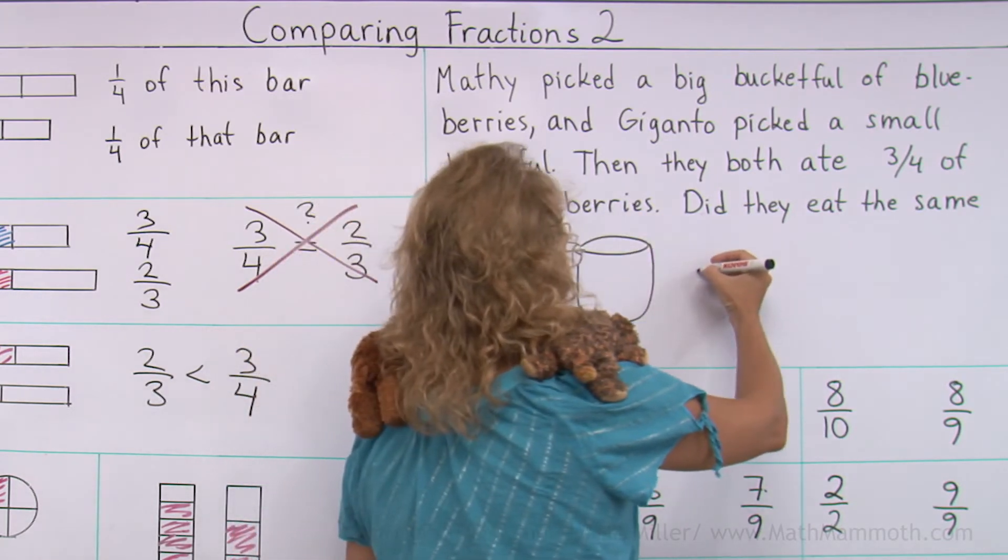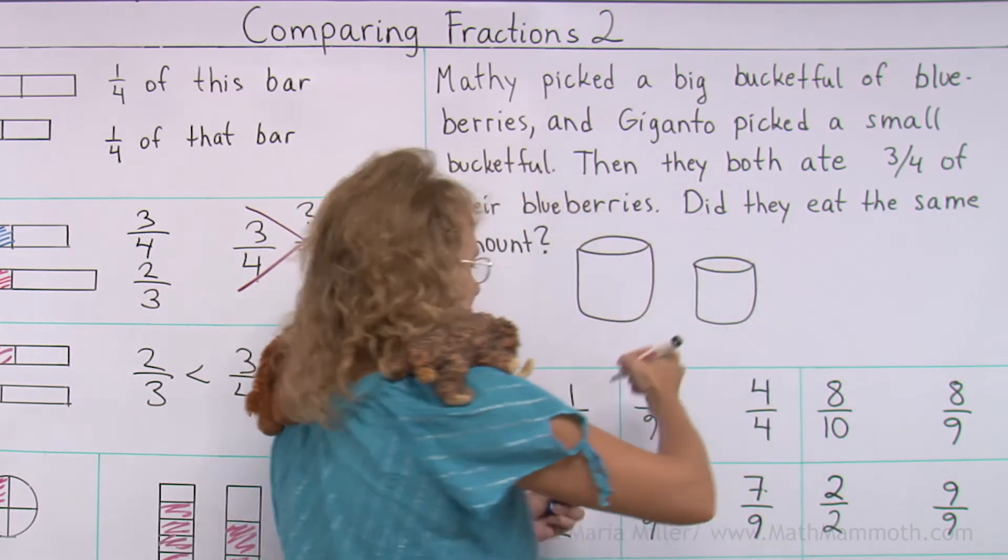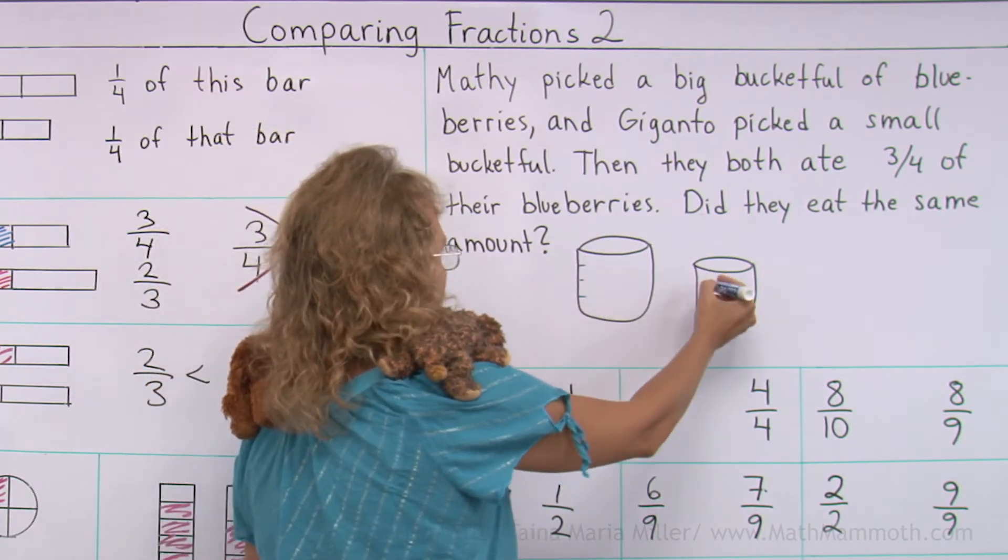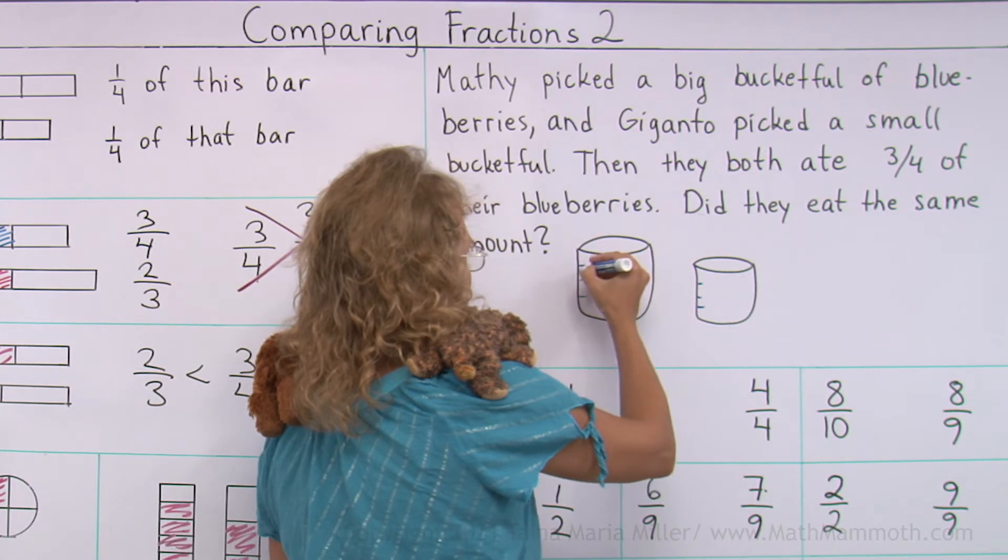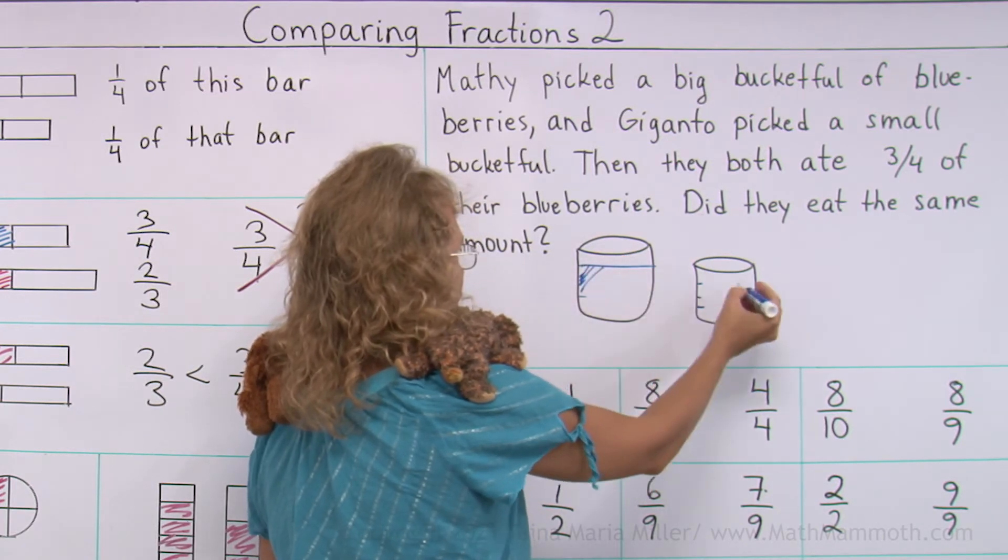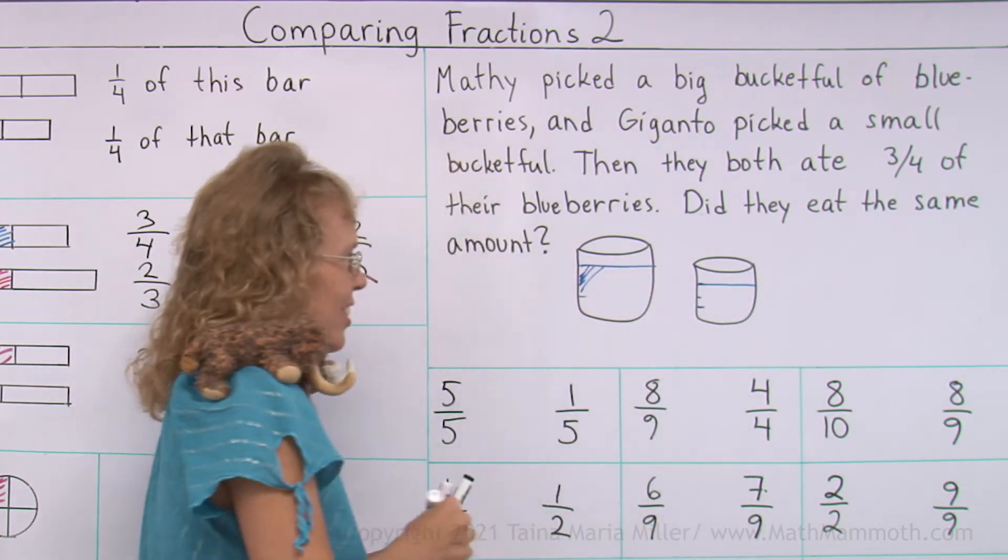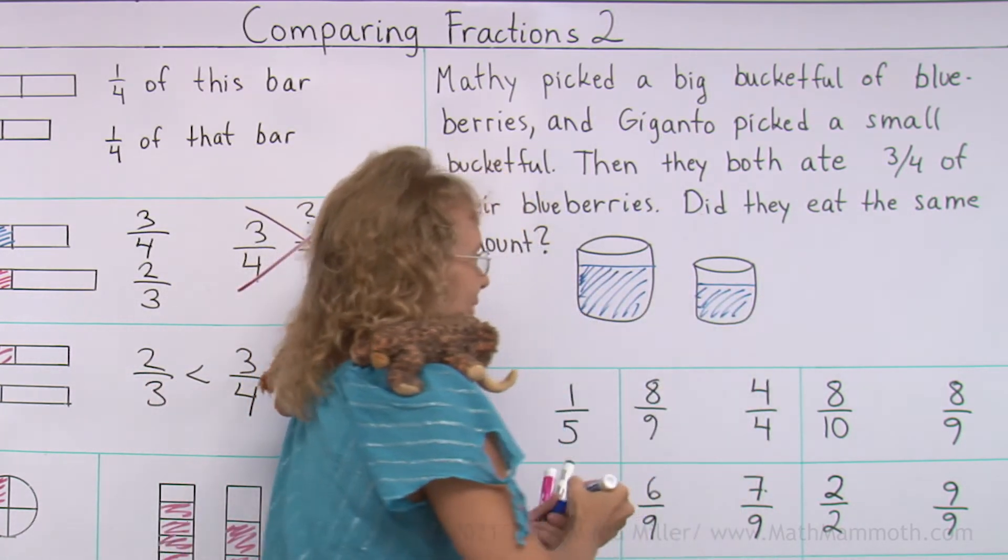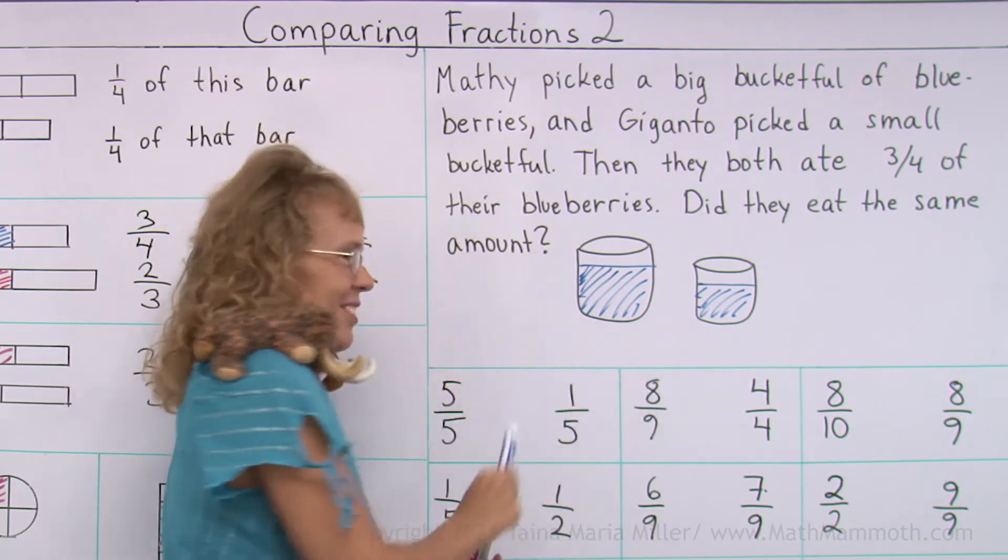If there's a big bucket full and then a small bucket full. And if it was divided into four parts. And you eat up to that, up to that much. Oh, maybe. Let's color it in. Yeah, blueberries. Then this is more than that, right?